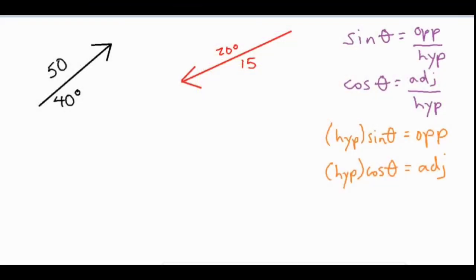In this video we're going to be taking a look at angled vectors and talking about how to break those into components and then what to do with those components in order to get a final solution. You're going to have to use two trig functions, sine and cosine. You can use tangent but it's usually very unlikely in these cases.